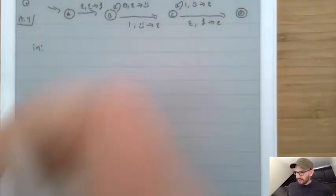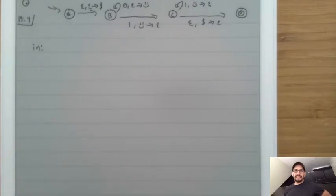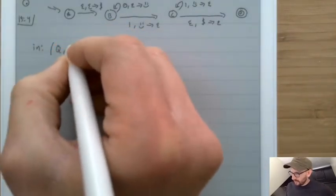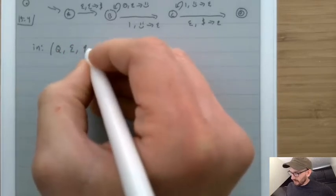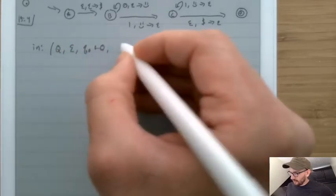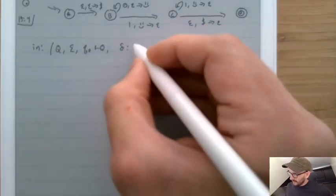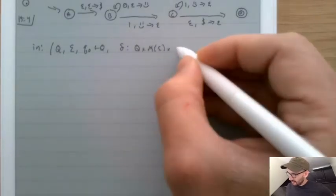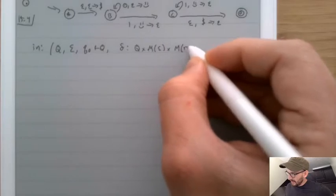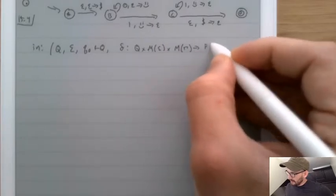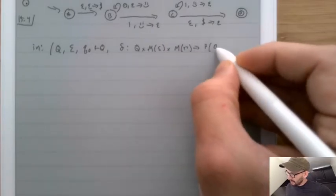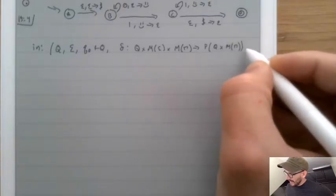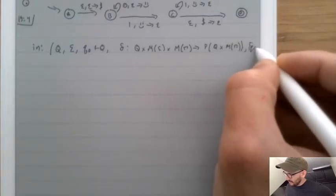The input to this algorithm is a PDA: Q, sigma, Q0 inside Q, delta from Q × maybe-sigma × maybe-gamma → powerset of Q × maybe-gamma, and exactly one accept state QF.